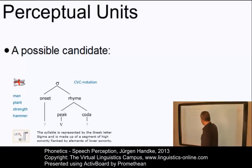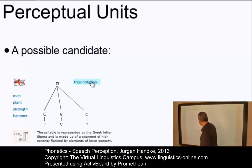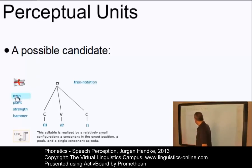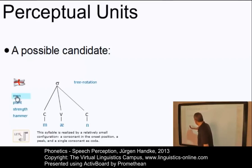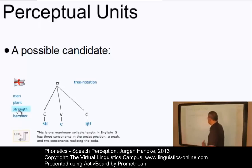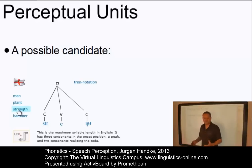The syllable consists of an onset, a peak, and a coda. This is the standard notation; here is an abbreviated notation, and here are some examples. A very simple syllable: 'man'. 'Man' consists of the onset — a bilabial nasal — a vowel in the peak, and the coda is another nasal consonant. If we take 'strength': we have three consonants in the onset, one vowel in the peak, and two consonants in the coda. So, this is the syllable.